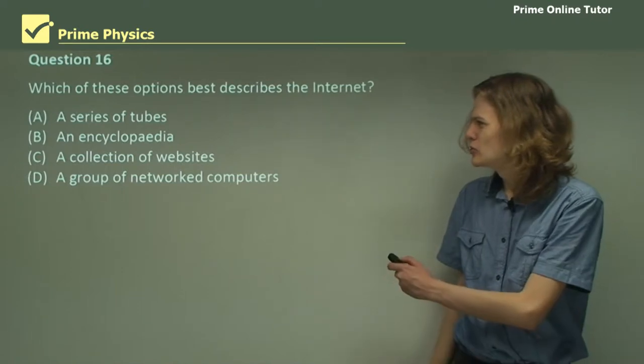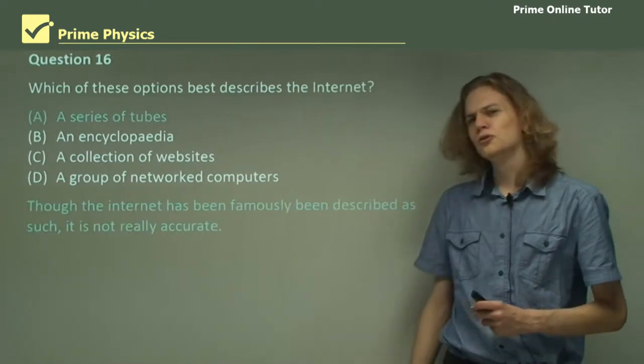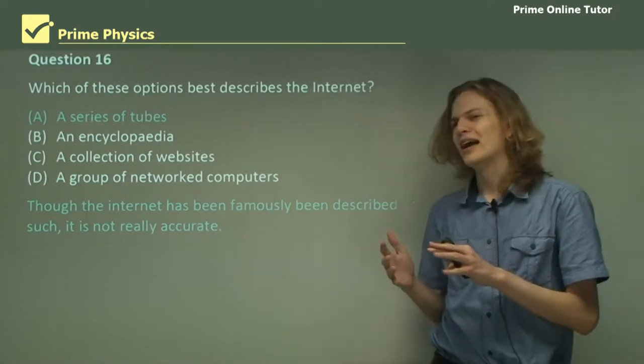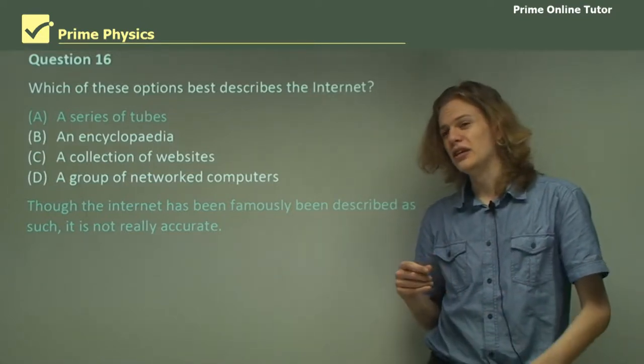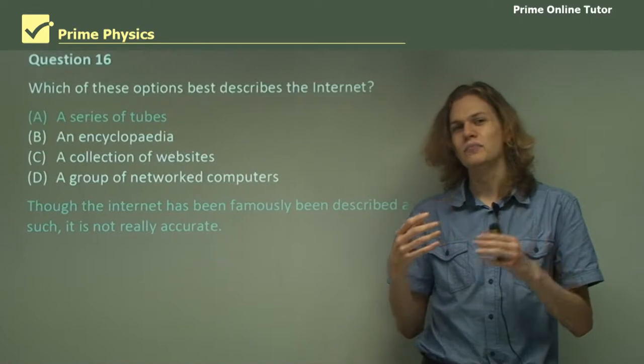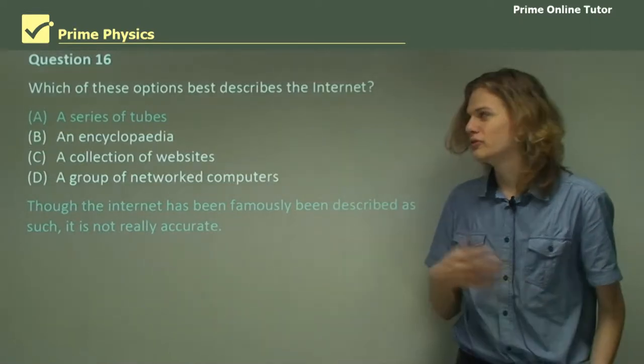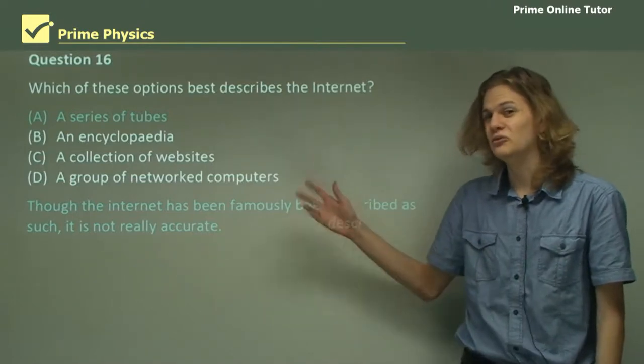The first one says a series of tubes. Now, I seem to recall someone describing the internet like that before, but it's not really very accurate. You could say that the information being carried across the internet has to travel through a series of telephone cables or a series of carriers, but that's not really a series of tubes.